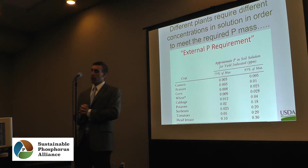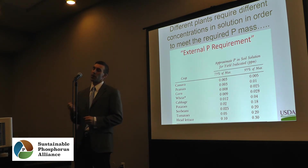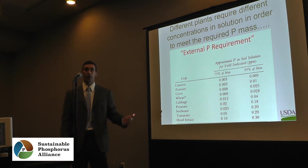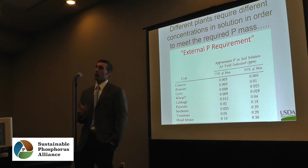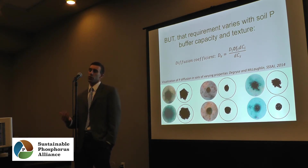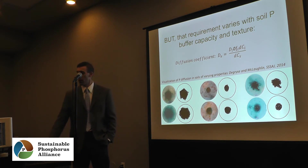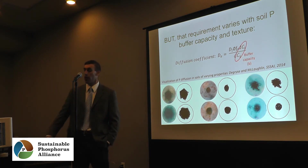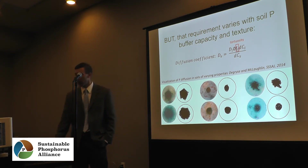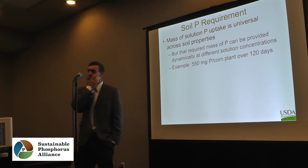Different plants require different concentrations of phosphorus in solution to meet the required mass. At the end of the day, a certain mass of phosphorus must be in the plant to achieve maximum yield, and there are estimates of what dissolved P concentrations are needed for different crops — called the external phosphorus requirement. But it's not universal. A group of scientists in the late 1970s assumed it was universal, but it's not, because the external solution requirement varies with phosphorus buffer capacity and also with soil texture.